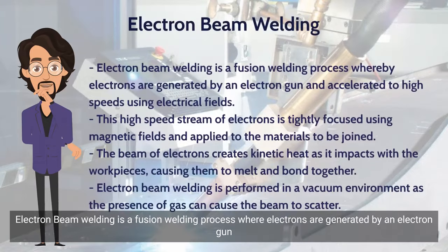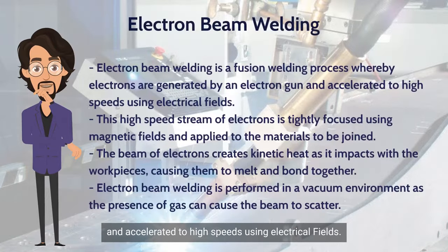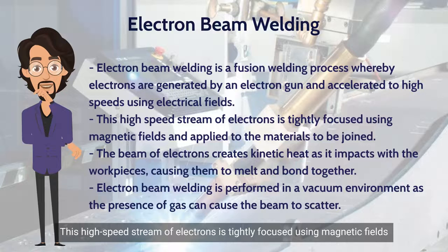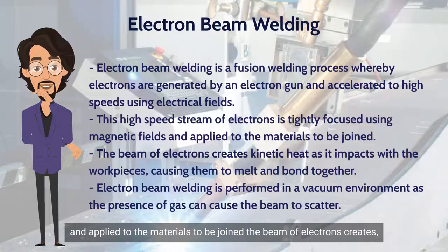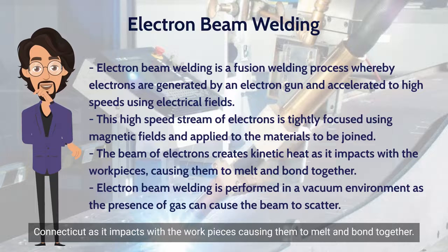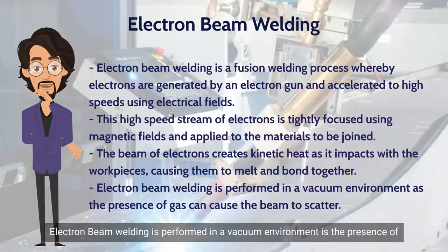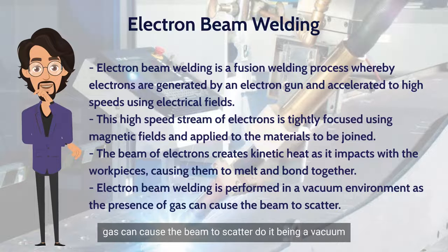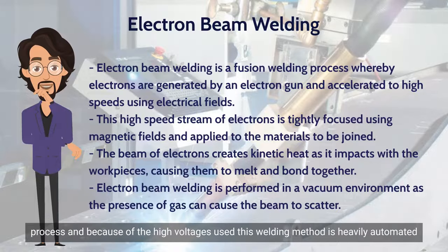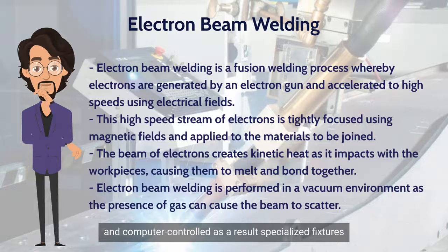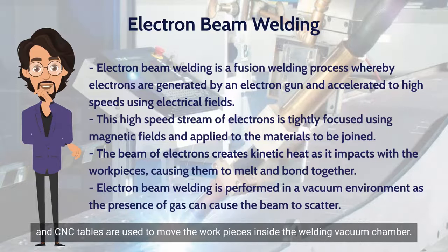Electron beam welding is a fusion welding process where electrons are generated by an electron gun and accelerated to high speeds using electrical fields. This high-speed stream of electrons is tightly focused using magnetic fields and applied to the materials to be joined. The beam of electrons creates kinetic heat as it impacts the workpieces, causing them to melt and bond together. Electron beam welding is performed in a vacuum environment, as the presence of gas can cause the beam to scatter. Being a vacuum process and because of the high voltages used, this welding method is heavily automated and computer controlled, with specialized fixtures and CNC tables used to move the workpieces inside the welding vacuum chamber.